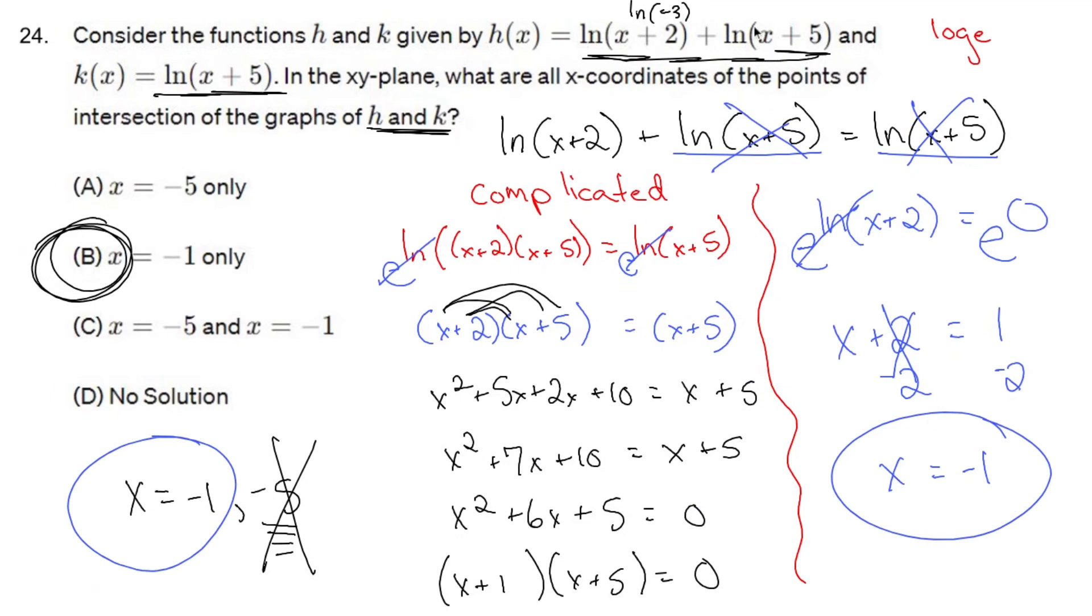You're allowed to plug in negative 1. The reason why this ended up weird is because this problem that I created, I wasn't thinking, and I made ln of x plus 5 twice. But you know what? This gave us two different ways of looking at it. And boy, did I have fun. Hope this helps.